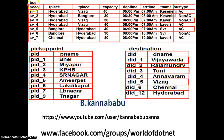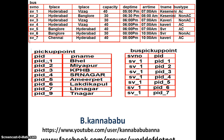Based on the relationship between bus and pickup points, I created one more table — that is the bus pickup points table. In the bus table, service number is the primary key. In the pickup points table, PID is the primary key. In the bus pickup point table, service number is a foreign key and PID is also a foreign key. The combination of SV number and PID can be called a composite primary key constraint.